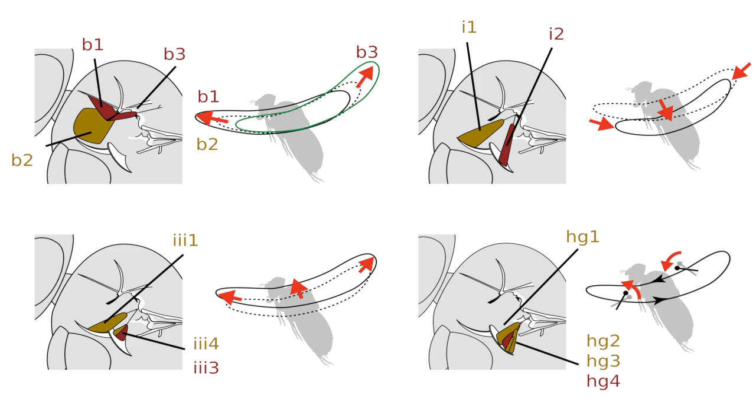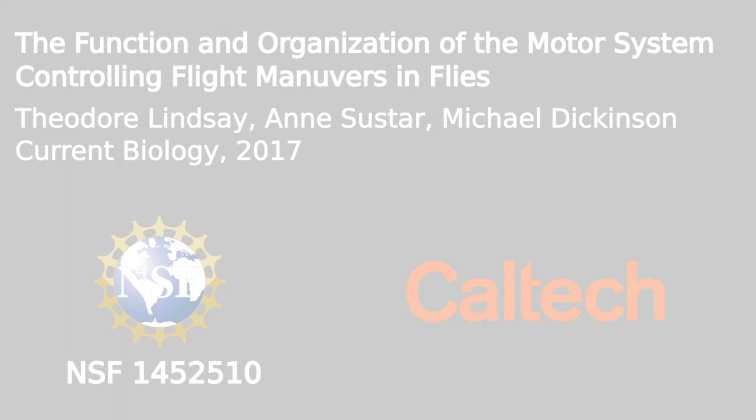Unlike a sailboat, however, a fly must steer in three dimensions. To do so, it makes use of four control modules, each equipped with at least one tonic muscle and one phasic type of muscle.